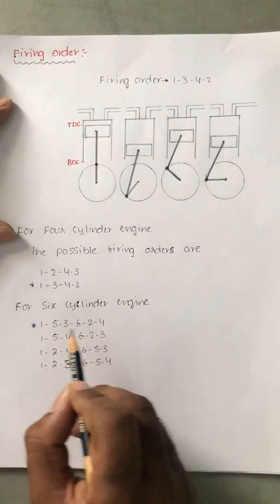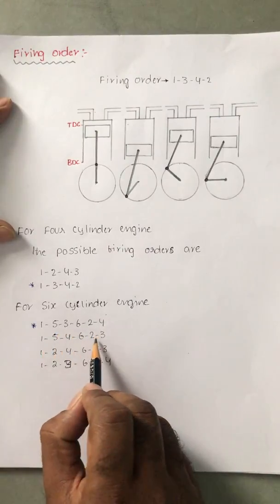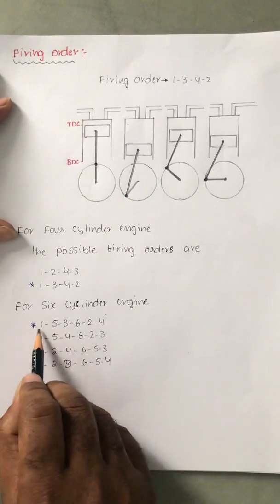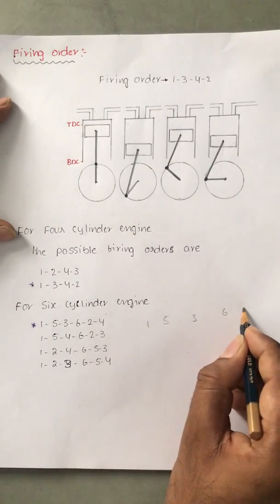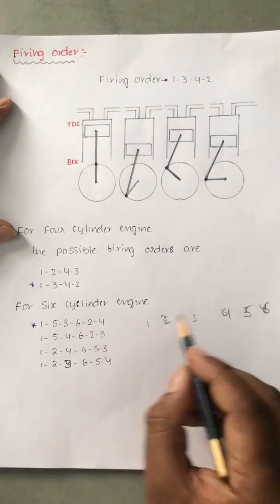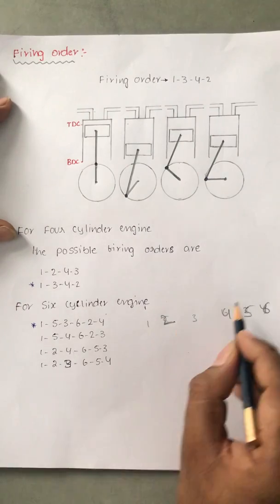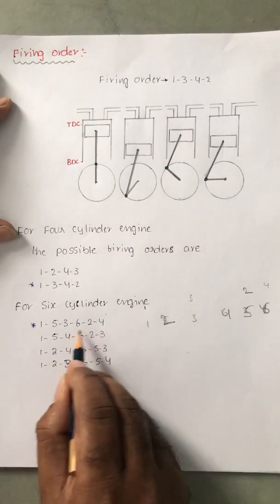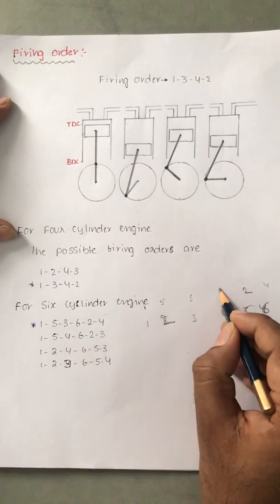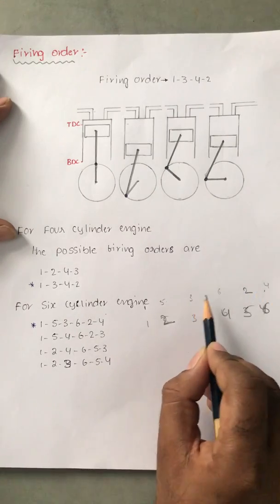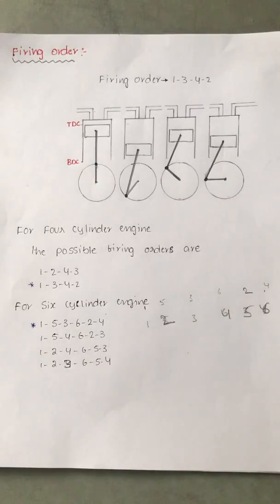For a six-cylinder engine, the possible firing orders are: one-five-three-six-two-four, one-five-four-six-two-three, one-two-four-six-five-three, and one-two-three-six-five-four. The most commonly used is one-five-three-six-two-four. For cylinders numbered one through six, the firing alternates positions so that the arrangement is always alternate, giving uniform power output and reducing vibration.